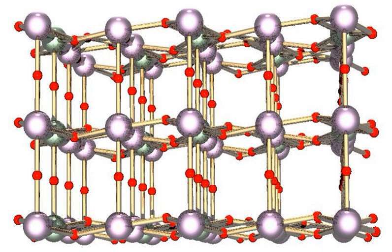U308 has potential long-term stability in a geologic environment. In the presence of oxygen, uranium dioxide is oxidized to U308, whereas uranium trioxide loses oxygen at temperatures above 500 degrees Celsius and is reduced to U308.